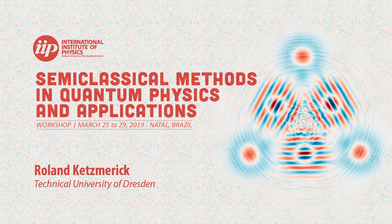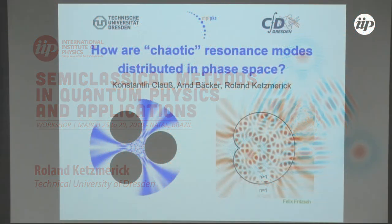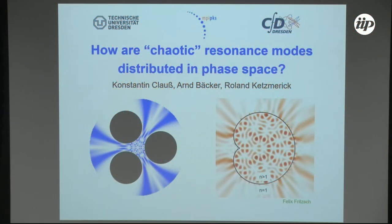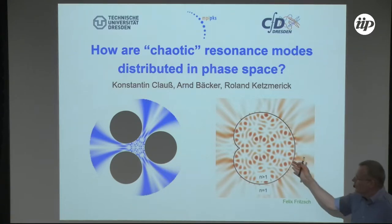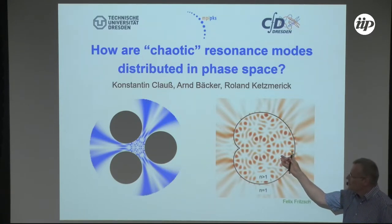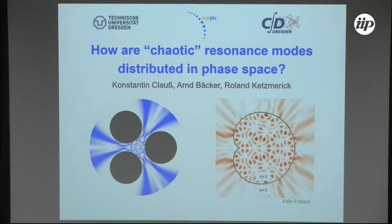In chaotic systems, mainly I will be talking about quantum maps, but you can just as well think about classical systems like the three-disk chaotic scattering systems. Or when I talk about systems with partial escape later, you can think about optical microcavities where you have a different index of refraction inside and outside, where you have resonance modes that decay.